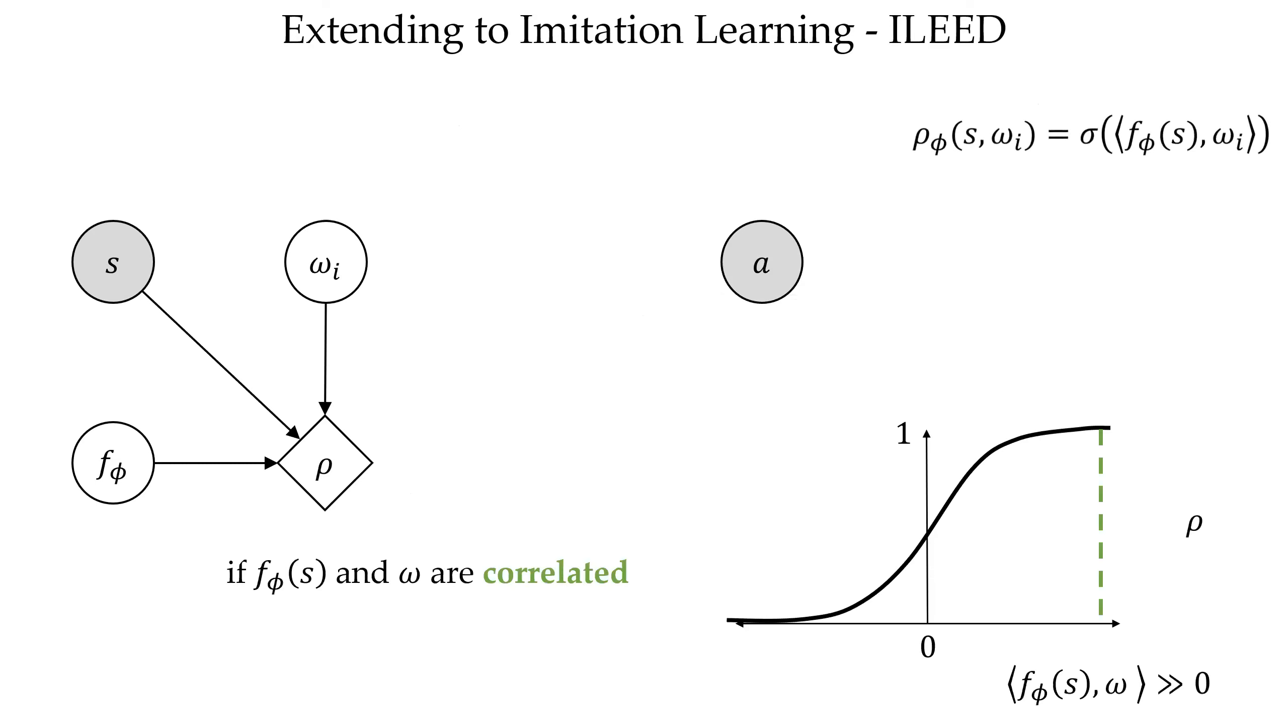This way, when the task embedding and skill vector are correlated, we expect the agent to perform well as their expertise is close to one. And conversely, when they are uncorrelated, the probability of success goes to zero.